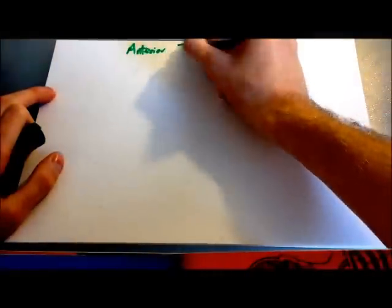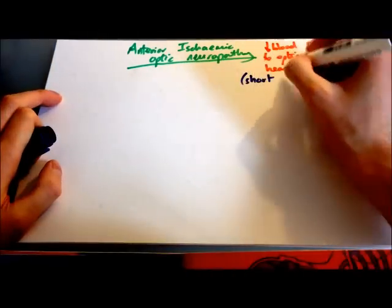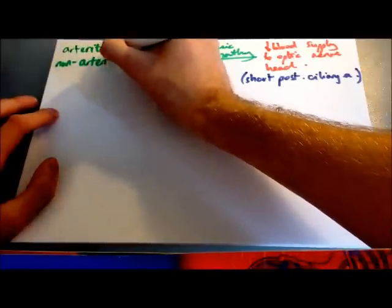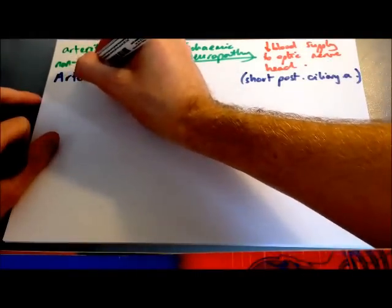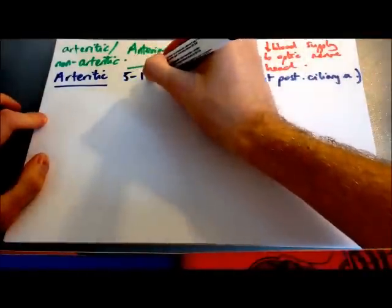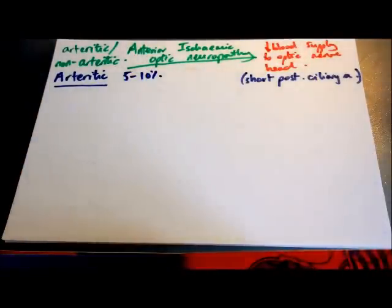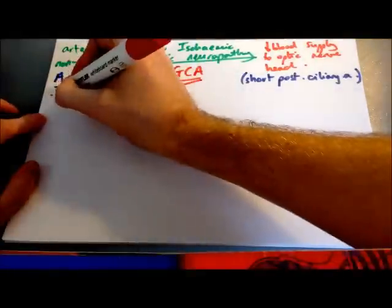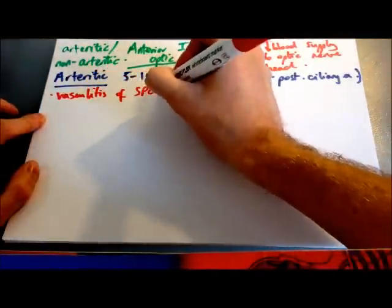Finally, let's look at anterior ischemic optic neuropathy — a condition where there is insufficient blood supply to the optic nerve head, leading to visual loss, usually through the short posterior ciliary artery. It's classified into arteritic and non-arteritic anterior ischemic optic neuropathy. We'll start with arteritic, which is the more severe of the two — this is 5-10% of cases, and the major association is with giant cell arteritis or temporal arteritis. It involves vasculitis of the short posterior ciliary artery.